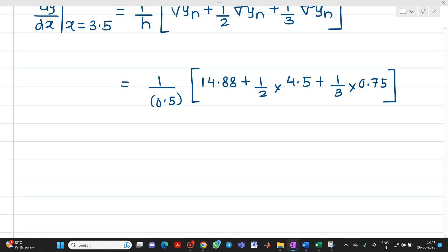Which is equal to 1 upon 0.5 into bracket 14.88 plus 4.5 divided by 2, you will get answer as 2.25, plus 0.75 divided by 3, you will get it as 0.25. So if you add it, 0.25 plus 2.25 plus 14.88 divided by 0.5, you will get answer as 34.76. So this will be your answer of dy by dx at x equal to 3.5.